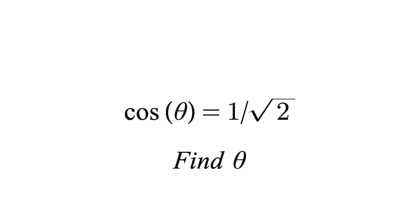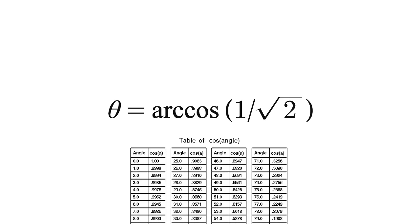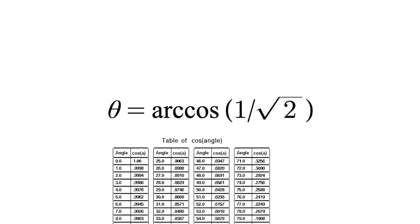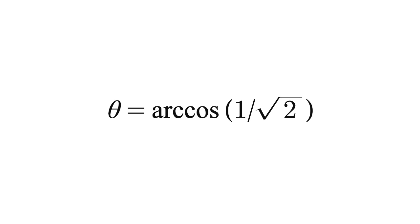By using our inverse cos function, we can deduce that theta is equal to inverse cos 1 over root 2. If we were in old times, we would use our table of cosines to determine the angle. But we can input inverse cos 1 on root 2 into our calculators to find the exact angle instead. Our answer should be theta equals 45 degrees.